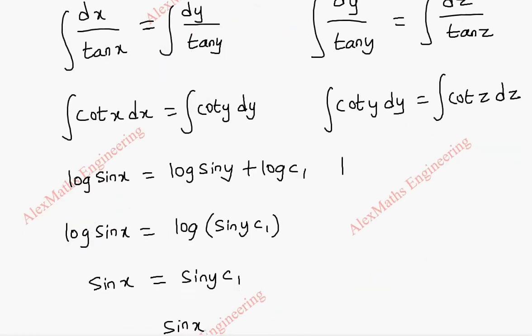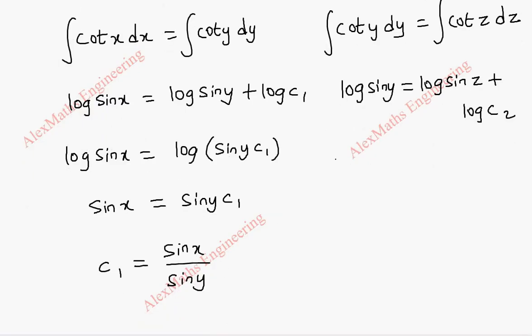Now, this is log sin y, and on the other side, log sin z. And we can take constant c2 as log c2 because all the other terms are log. Now, using log rule, on the other side, log sin z plus log c2 is log of sin z into c2. Now, removing log, we get sin y equal to sin z into c2. So from this, c2 is sin y by sin z.